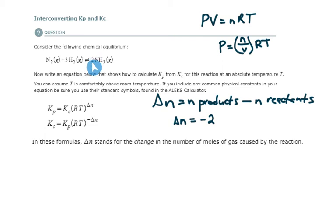And you can see how that is. I have two moles of product, and then I'm going to subtract from that the total number of moles of reactants, which is three plus another one, four. So two minus four. Two minus four is negative two.